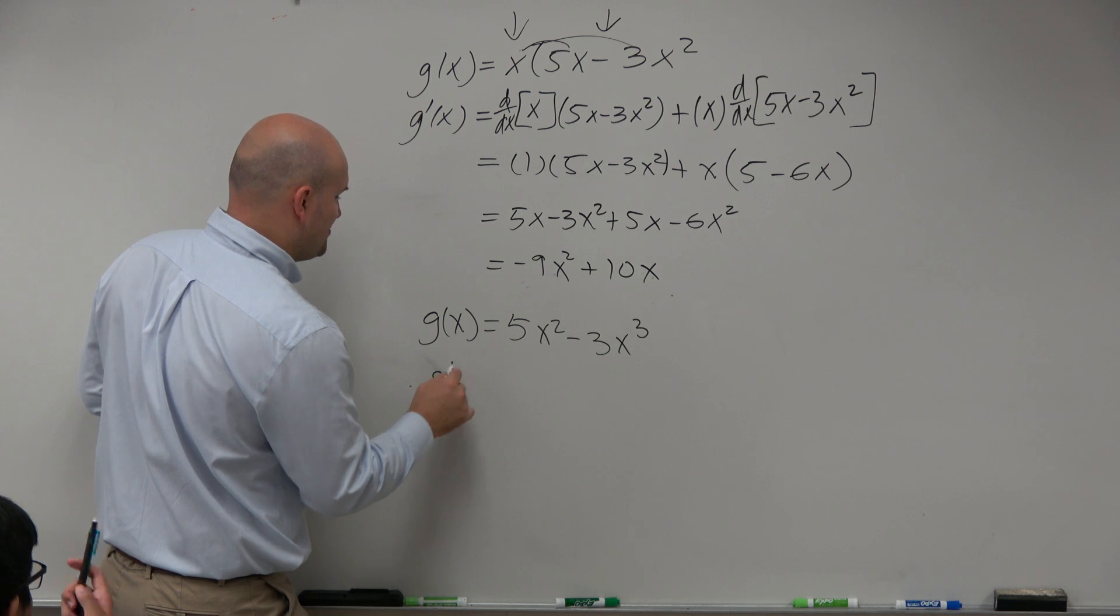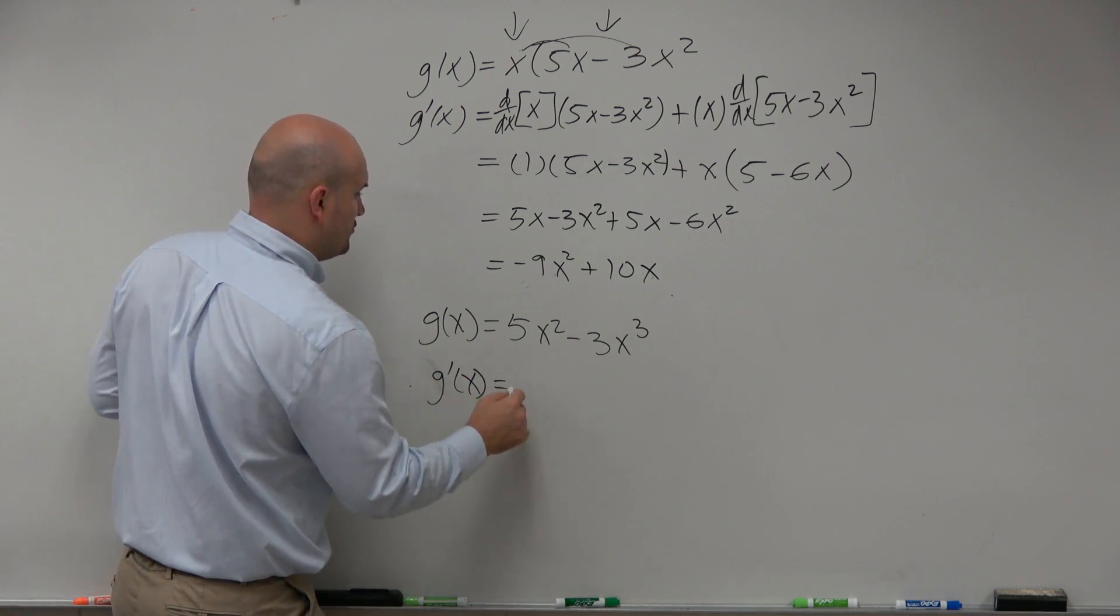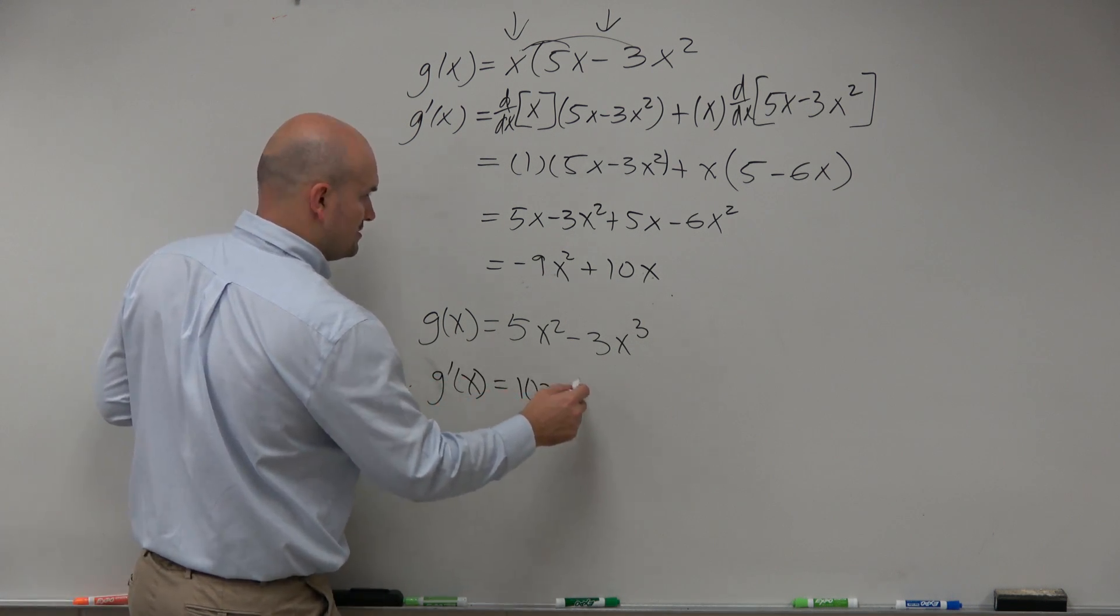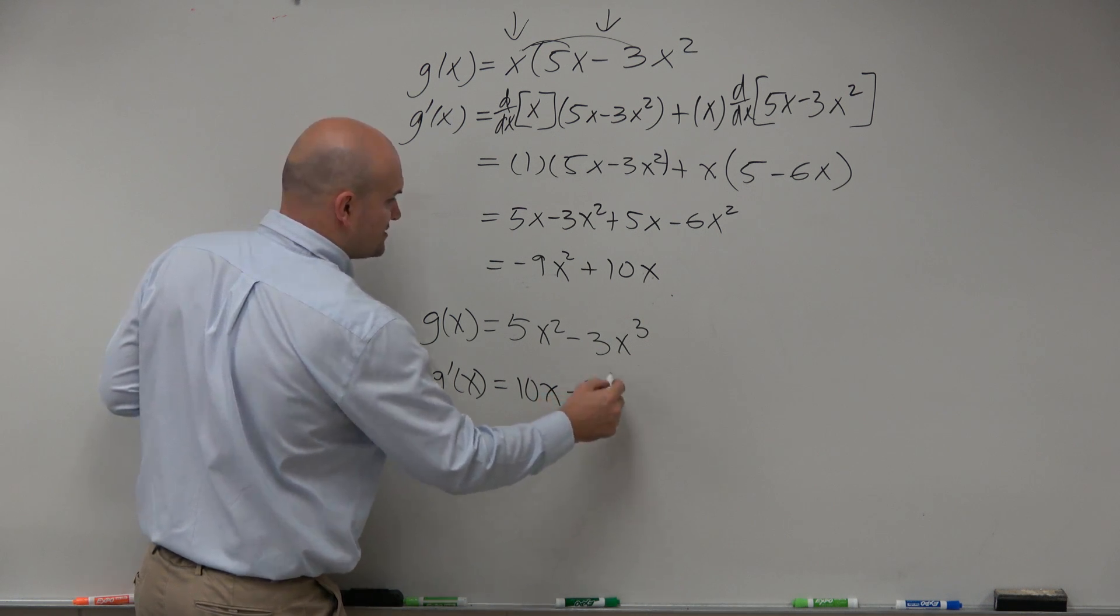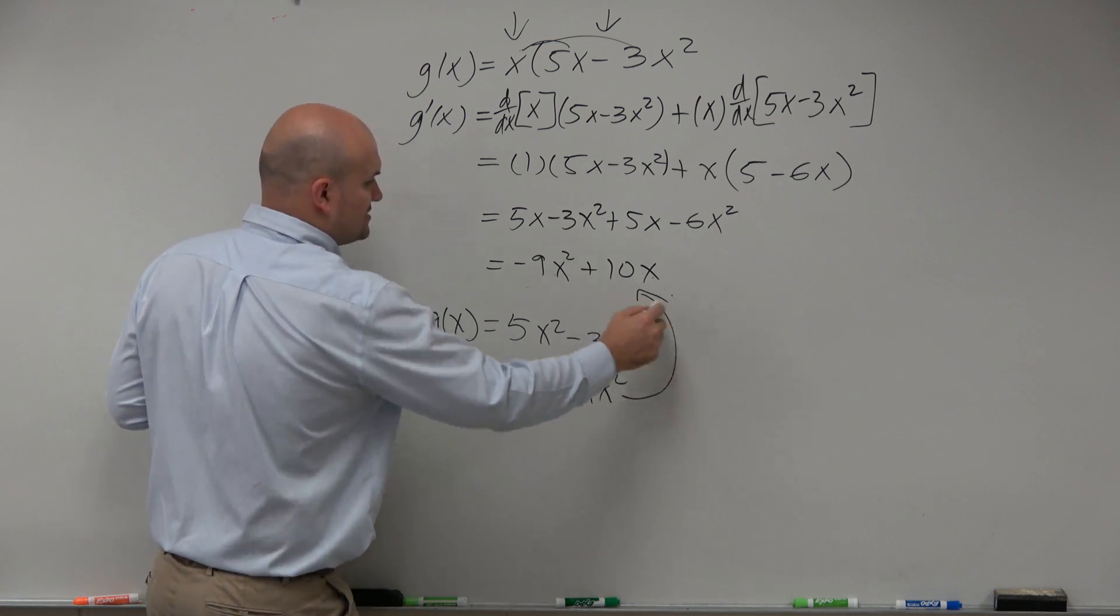I would get g prime of x equals 10x minus 9x squared. Which is exactly the same thing.